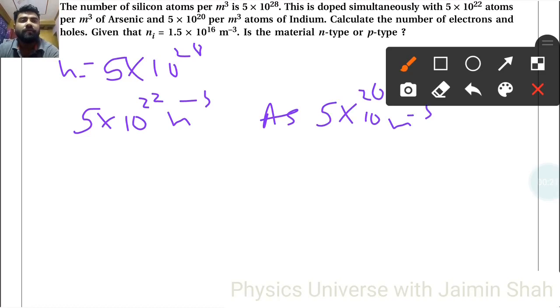Calculate the number of electrons and holes, given ni is 1.5×10¹⁶.